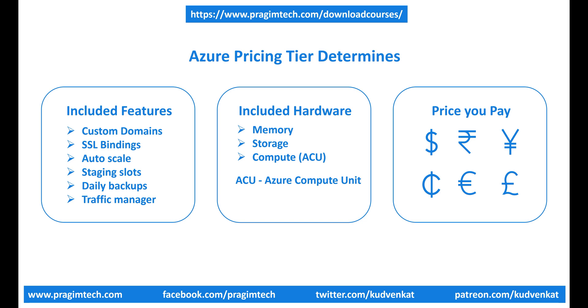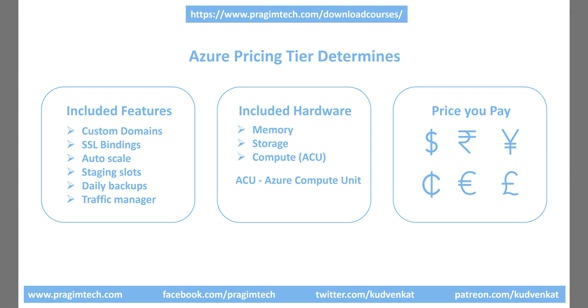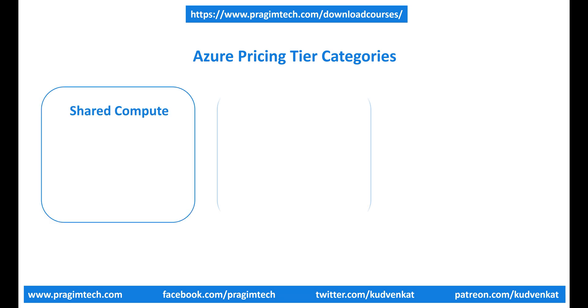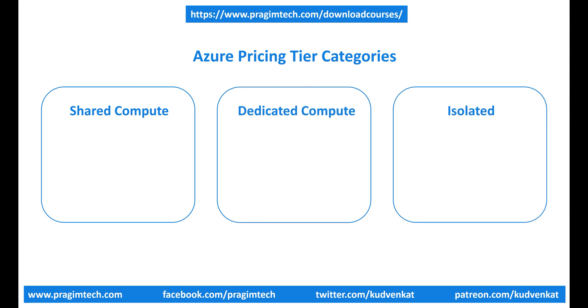We discussed this in detail in our previous video. In general, Azure pricing tiers are classified into three broad categories: shared compute, dedicated compute, and isolated.